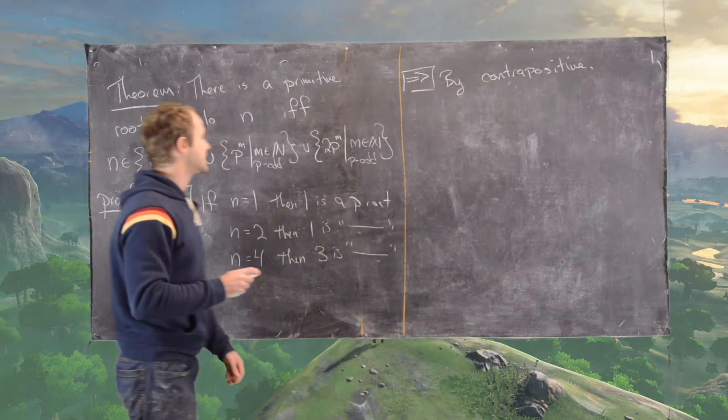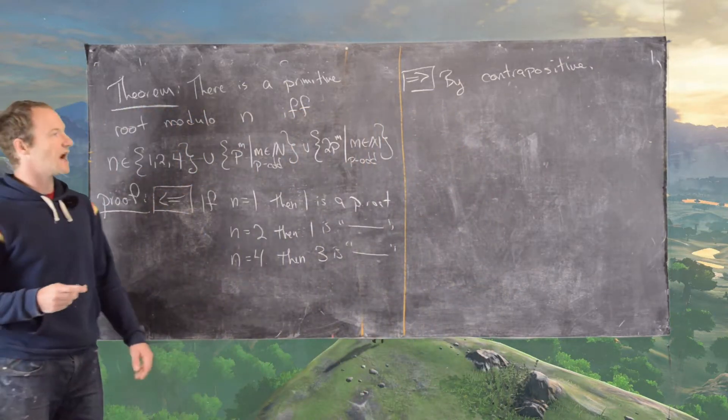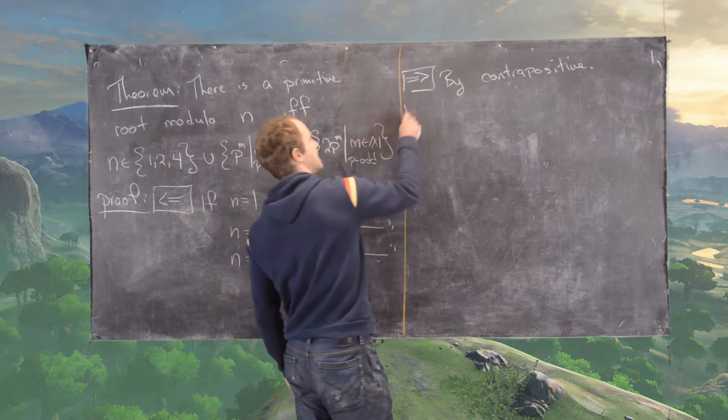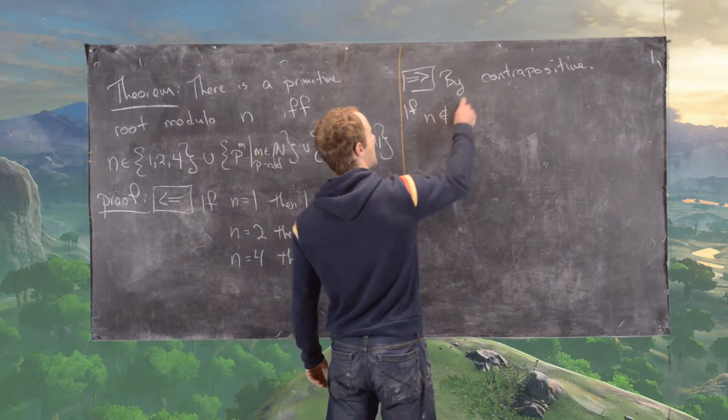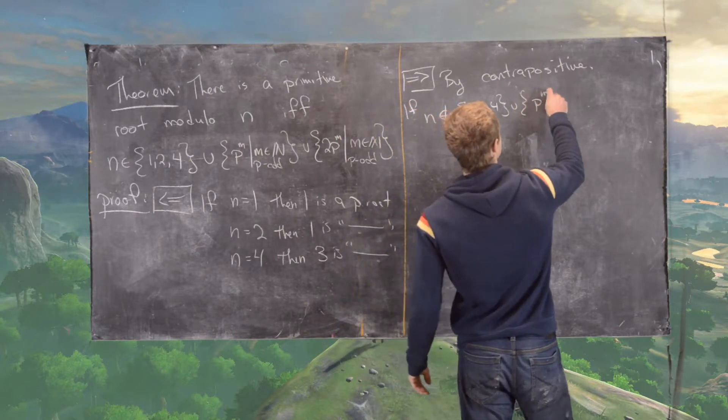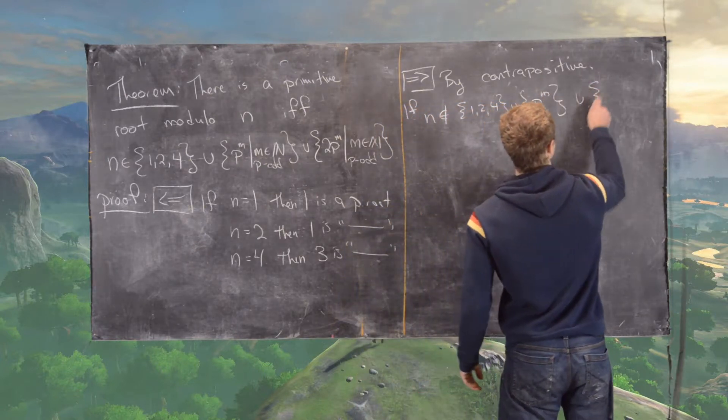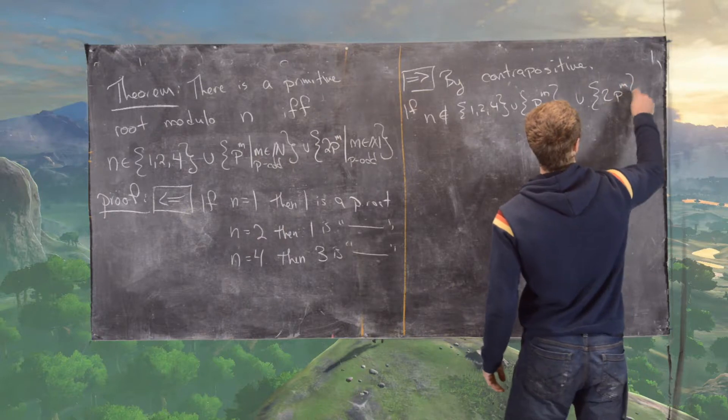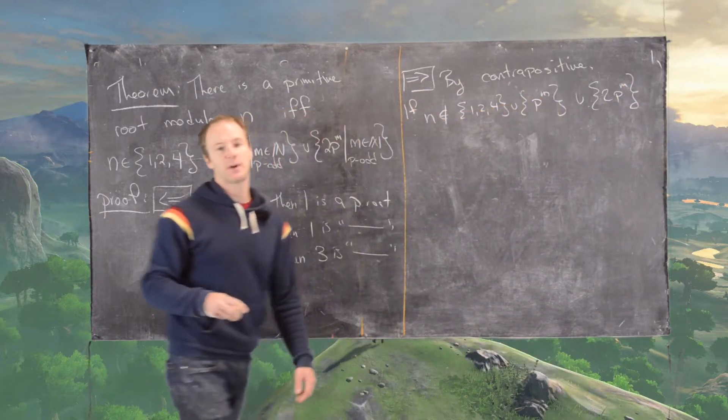And so let's notice that if n is not in this set—so if n is not in the set {1, 2, 4} union these powers of p union two times these powers of p—then you only have two possibilities.